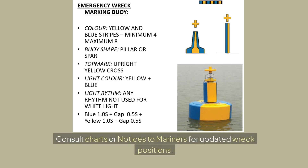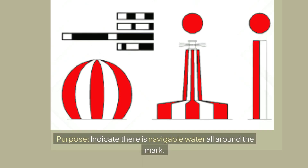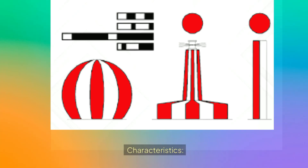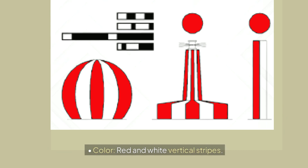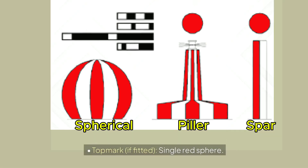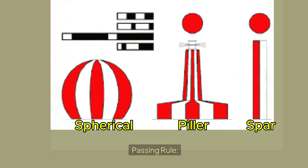Safe water mark. Purpose: indicate there is navigable water all around the mark, often used to mark fairways, landfalls, or the middle of the channel. Color: red and white vertical stripes. Shape: spherical, pillar, or spar. Top mark: single red sphere. Light: white with isophase, occulting, or long flash rhythm. Passing rule: safe to pass on any side.